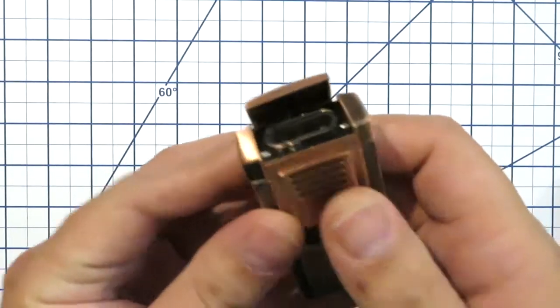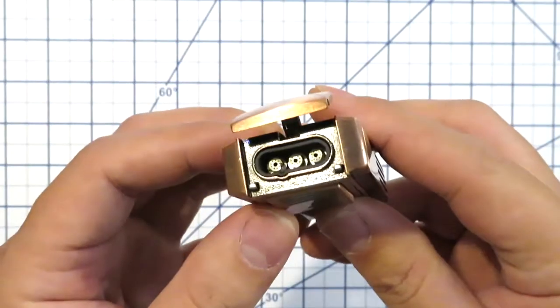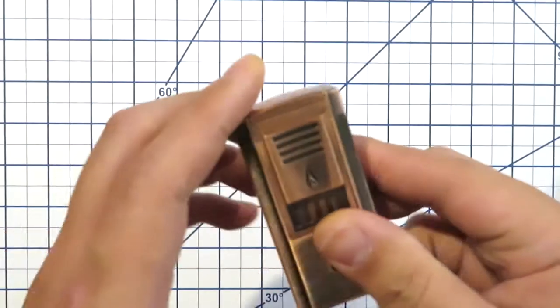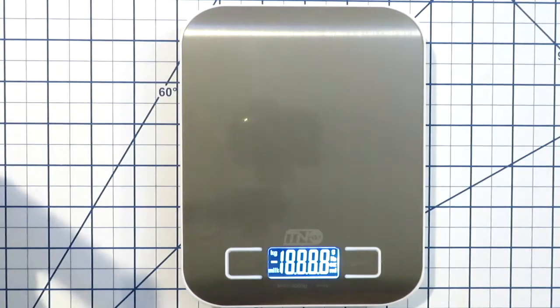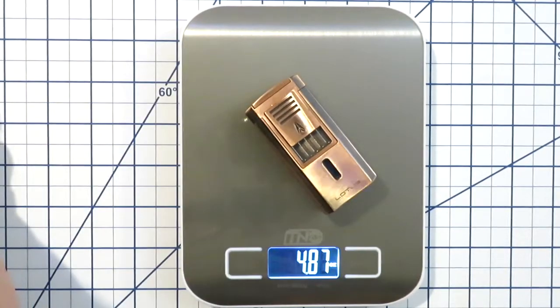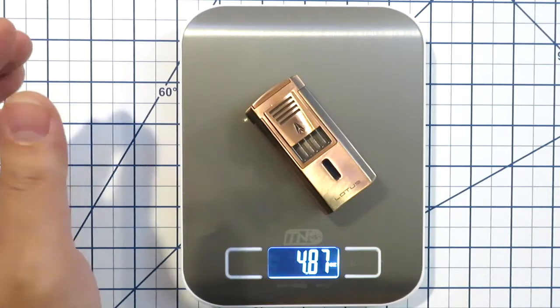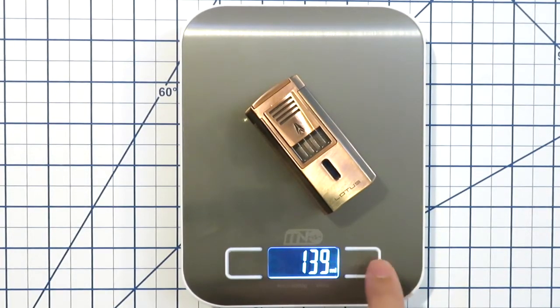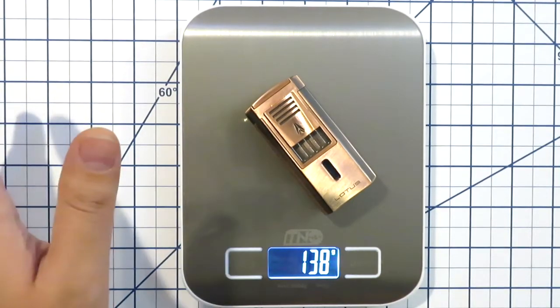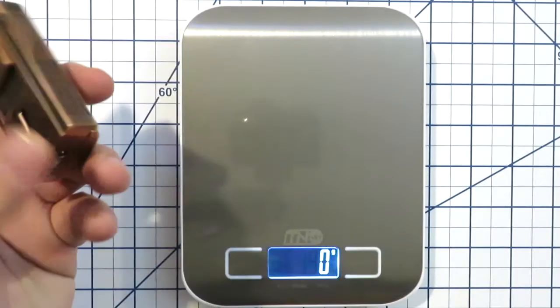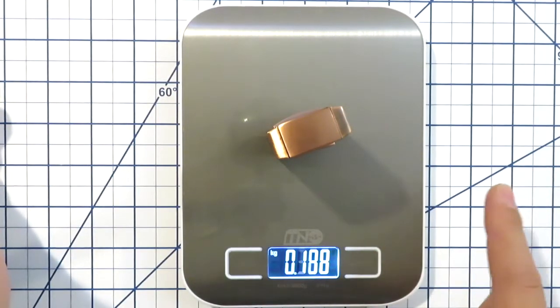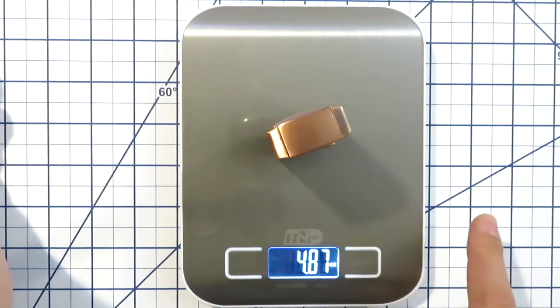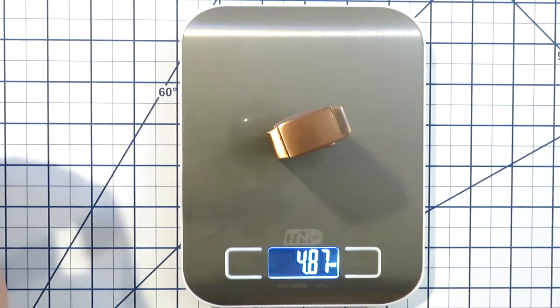It is a triple torch lighter. You can see the three jets there and let's take a look at the weight. This lighter comes in about 4.87 ounces which we're looking at 138 grams.